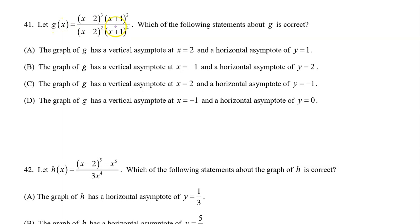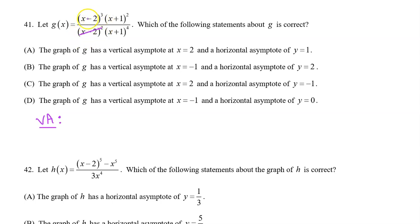Number 41. Let g of x equal this expression. Which of the following statements about g is correct? All of the options are about where the vertical asymptote is and where the horizontal asymptote is, so let's figure that out and compare. A vertical asymptote will come from a factor in the denominator that is not cancelled out by factors in the numerator. We notice that there are two factors of x minus 2 in the denominator. There are three in the numerator. Because there are more factors in the numerator, all of the factors of x minus 2 will get cancelled out, leaving one leftover factor of x minus 2 in the numerator. Because all of the x minus 2 factors in the denominator are gone, we have a hole at x equals 2, not a vertical asymptote.